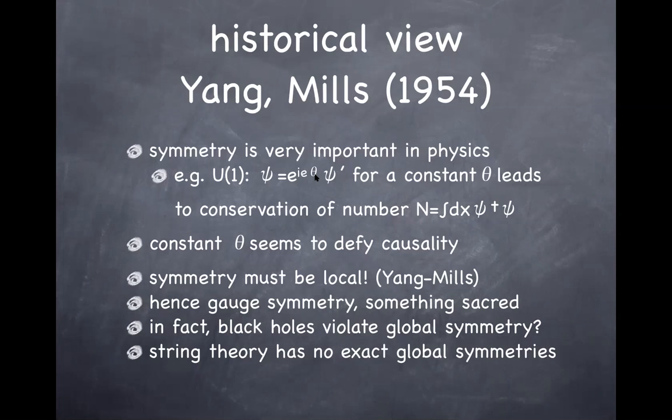That was the historical argument by Yang and Mills, and it's still repeated in many different contexts. Student: The consequences of causality seem to make sense. However, theta seems to be like just a redundant parameter — why does that have to obey causality? Instructor: Excellent — that's actually the next slide. Let me move to the next slide. This is the historic view on why gauge symmetry is important, but there is actually a more recent view by Nati Seiberg, which is getting more and more accepted these days.